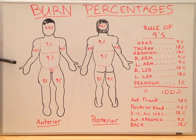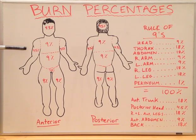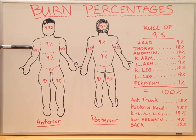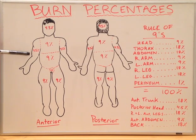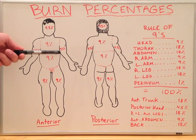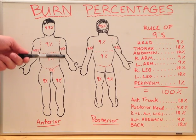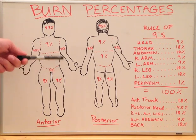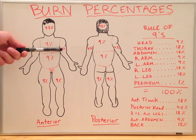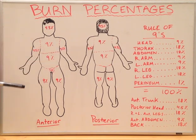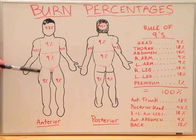The right arm — and by arm I am referring to the upper limb, including both arm and forearm and hand — is 4.5%. The left arm, forearm and hand is also 4.5%. The right leg, which I am referring to as thigh, leg, and foot, is 9%.